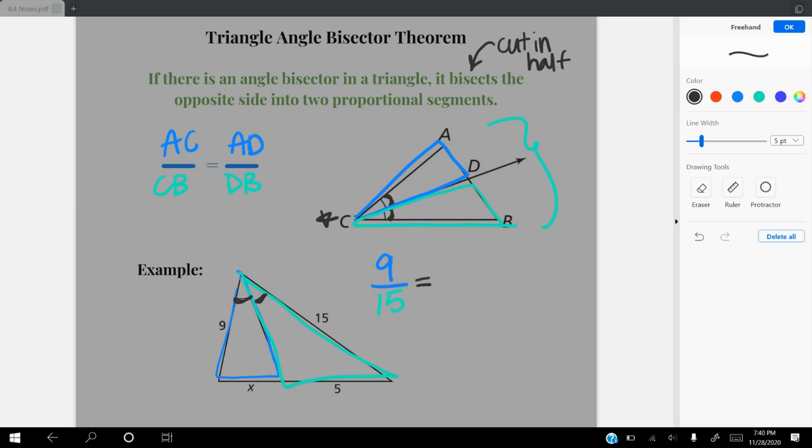And that's going to be equal to the short side in the blue triangle, which is X, over the short side in the green triangle, which is 5. When we're solving this equation, anytime you have a fraction equal to a fraction, you're going to cross multiply.